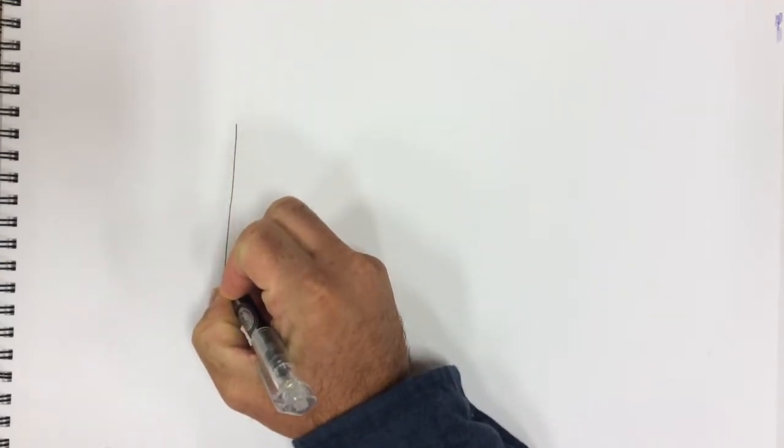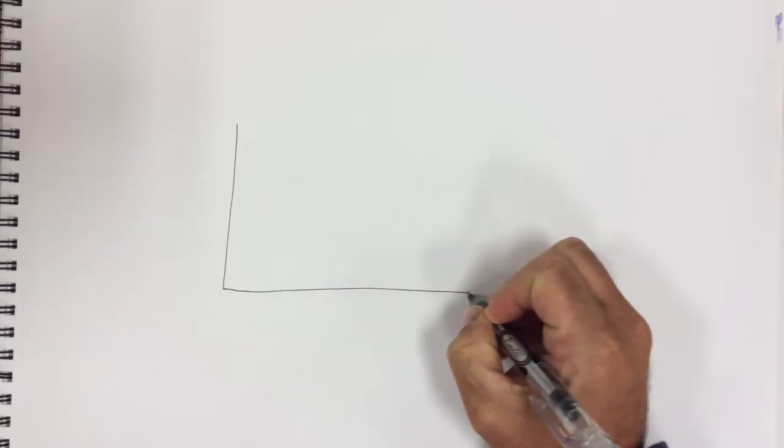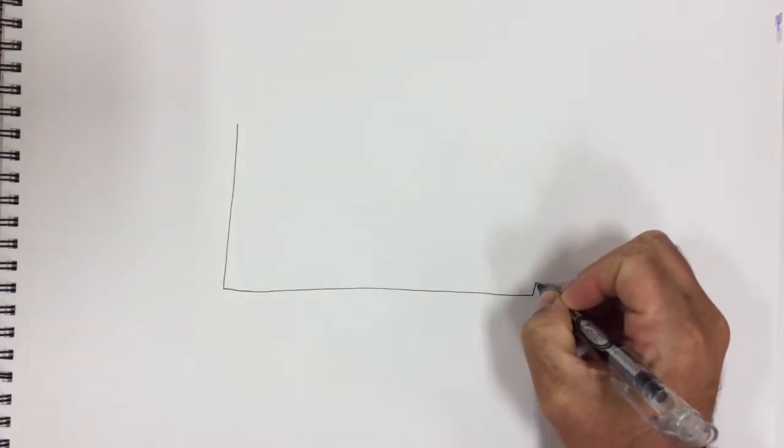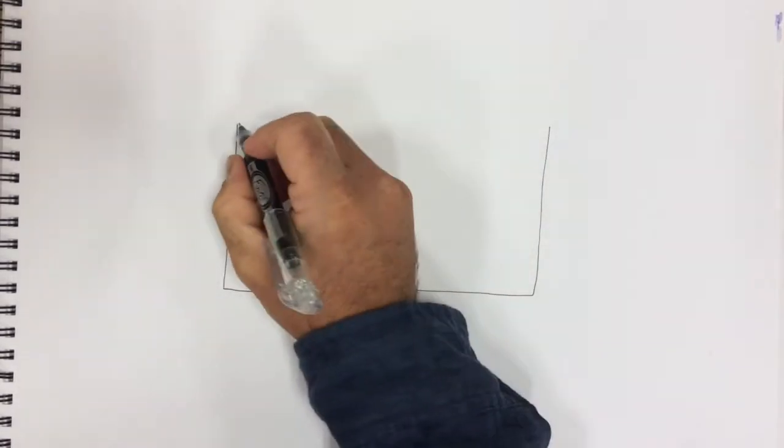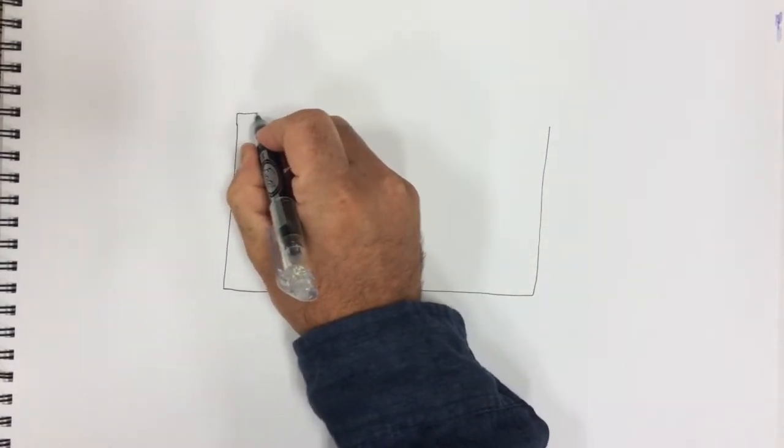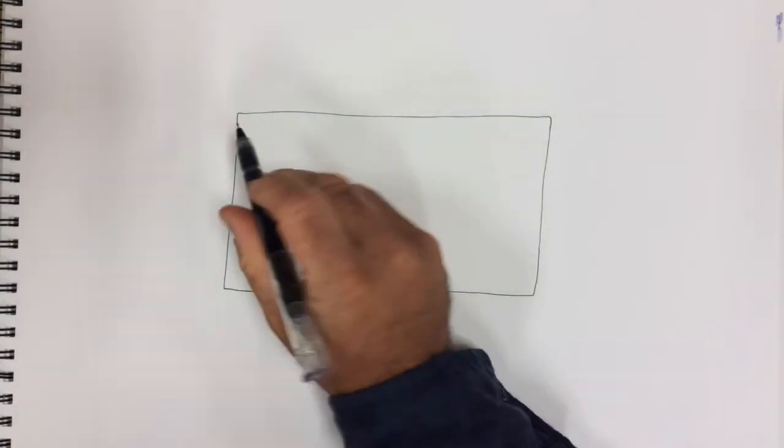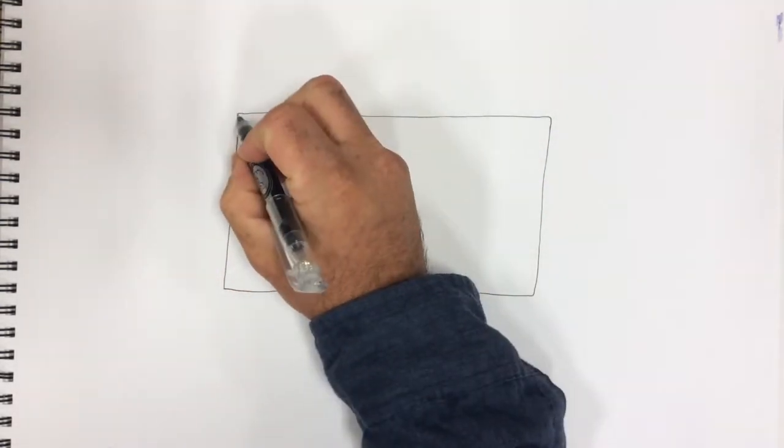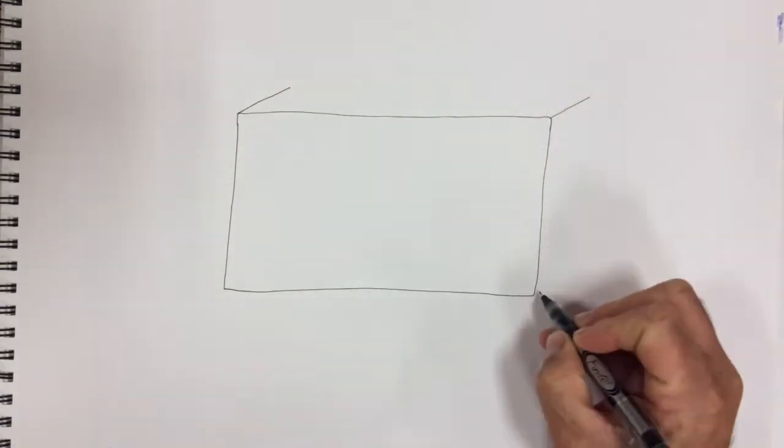Start out by drawing a big rectangle in the center of your paper. Alright, now find three corners of this rectangle and draw three slashes or diagonal lines. Make sure those diagonal lines are going exactly the same direction.